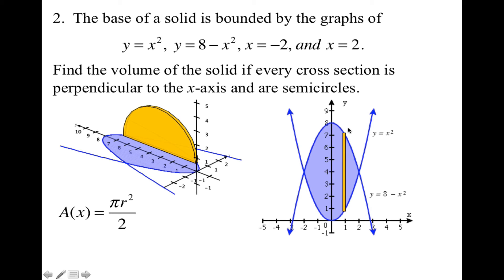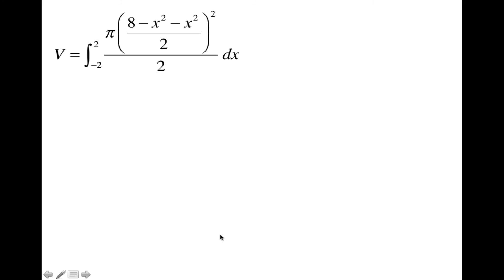To get the radius, we need to find the diameter first and then divide that by 2. I'm going to do top minus bottom to get my diameter, and then I'm going to divide it by 2. My top curve is the 8 minus x squared. My bottom curve is the x squared. Here is my diameter. To get the radius, I divide it by 2. Then I plug it in to my pi r squared over 2 formula, and I'm going to integrate that from negative 2 to 2.